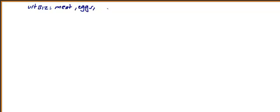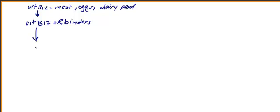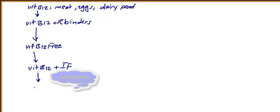Let's talk about vitamin B12 metabolism in detail. First, you have vitamin B12 from meat, eggs, and their products. Then vitamin B12 combines with R-binders, which are specific proteins. Then in a location we'll discuss shortly, you will have vitamin B12 free — without R-binders. Finally, you'll have vitamin B12 plus intrinsic factor.